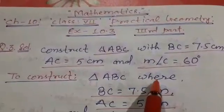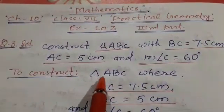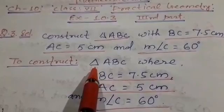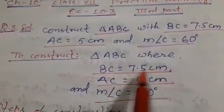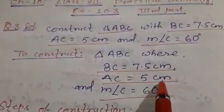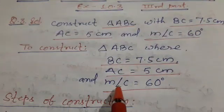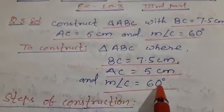At first we write to construct triangle ABC where all the information that is given in question. BC equal to 7.5 cm, AC equal to 5 cm and measure of angle C is equal to 60 degree.